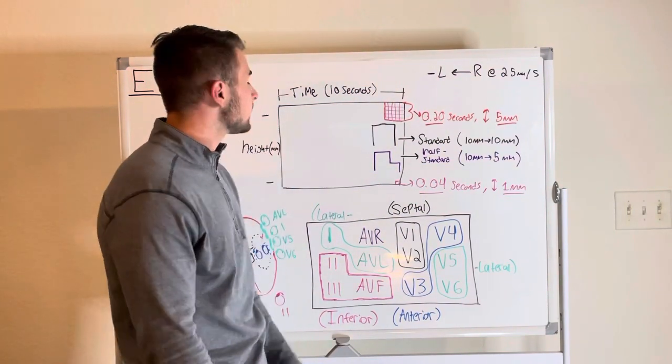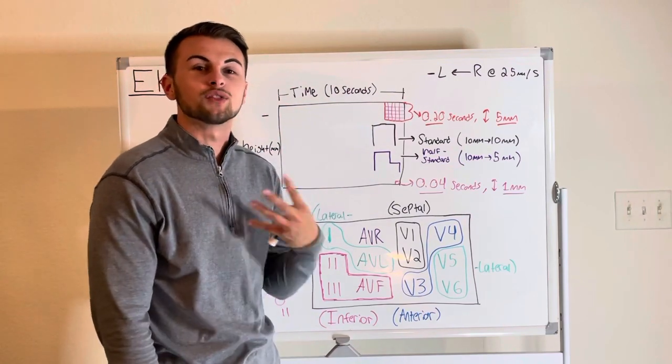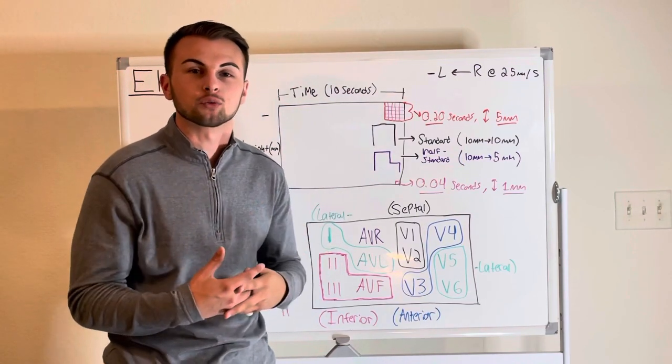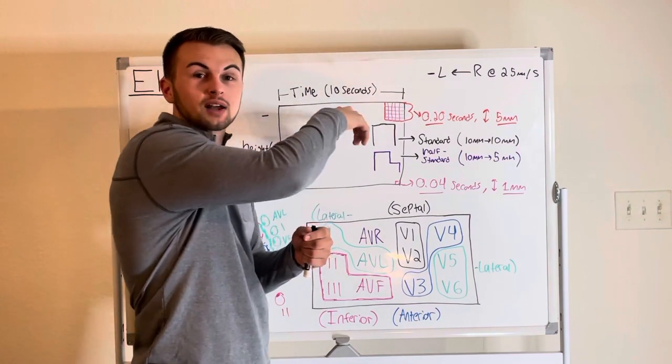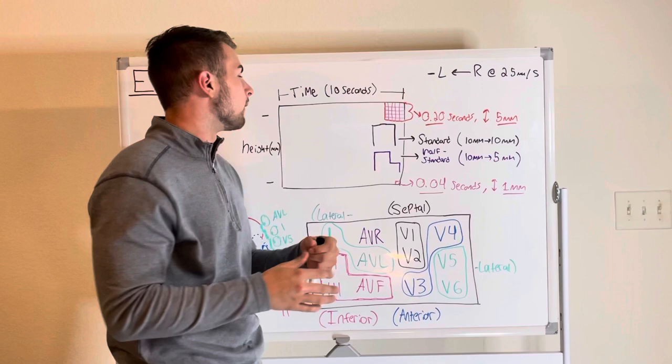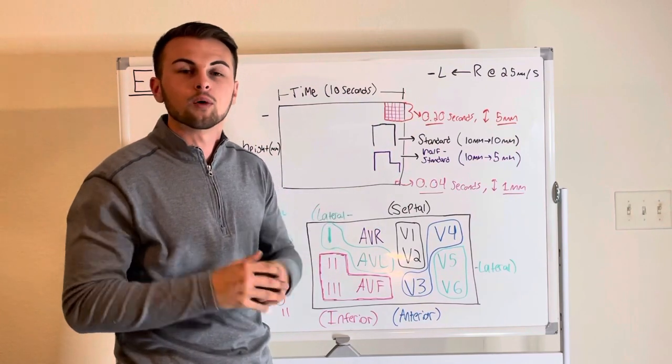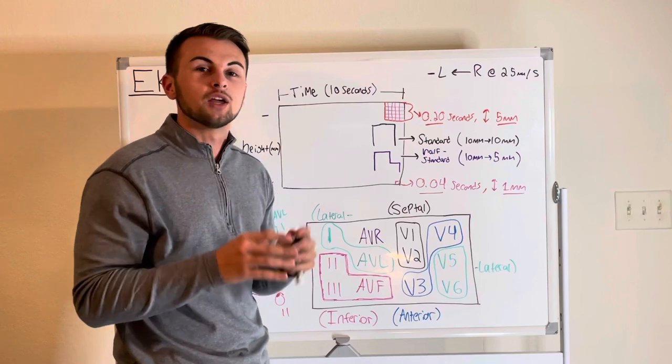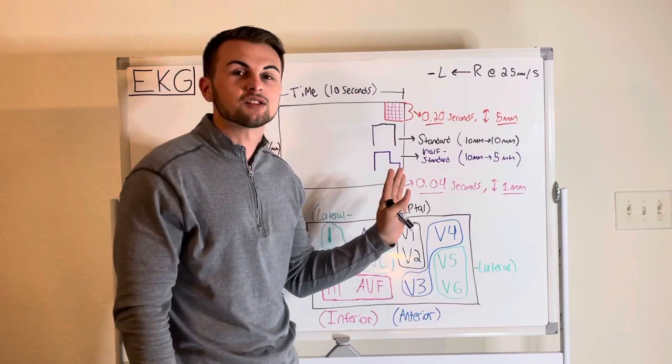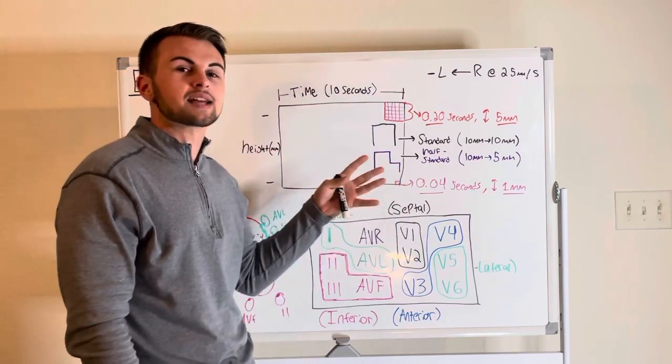Now normally an EKG sheet is around 10 seconds long so therefore if we need to quickly calculate the rate we can just multiply the amount of our wave or complexes and multiply by six but we'll go over that in another video. What we need to know right now is before you interpret the EKG you have to look to the far right side of the sheet and make sure that the machine is calibrated properly.